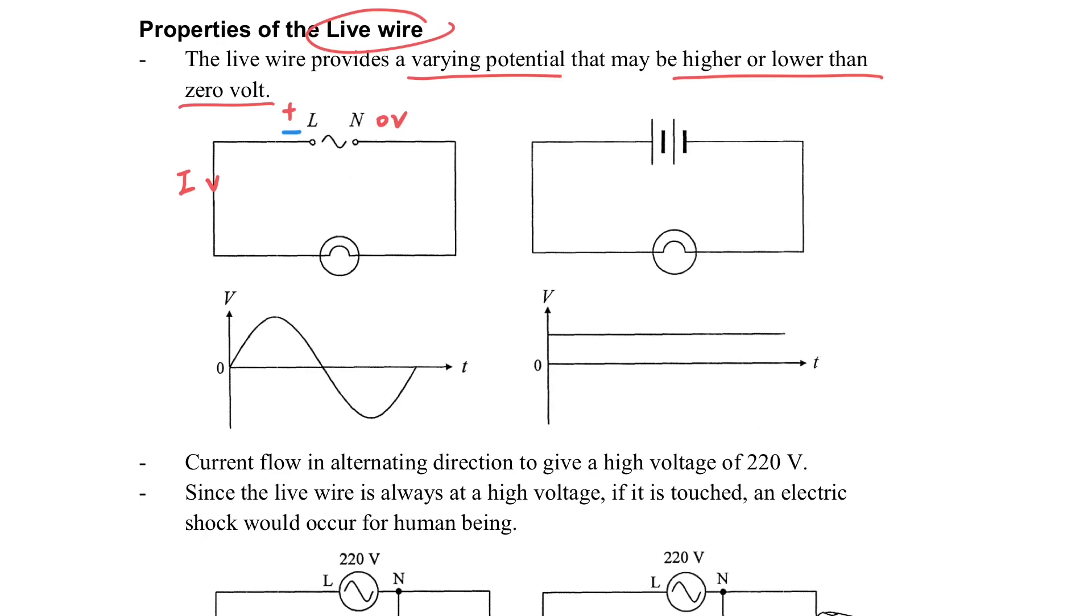For example, if it is positive, then the current will pass from the live to neutral. However, when it is negative, then the current is passed by the neutral to live. Even though it is varying, because of the high frequency the brightness of the light bulb will still be steady, even though the direction of current is changing. This is the characteristic of alternating current.